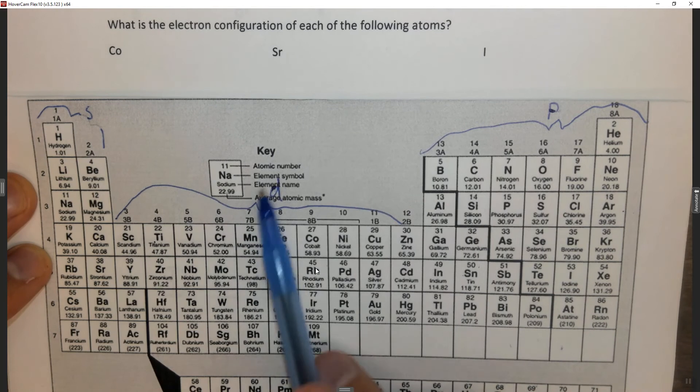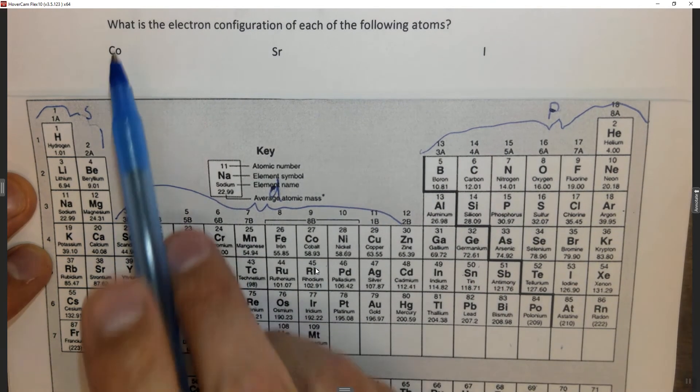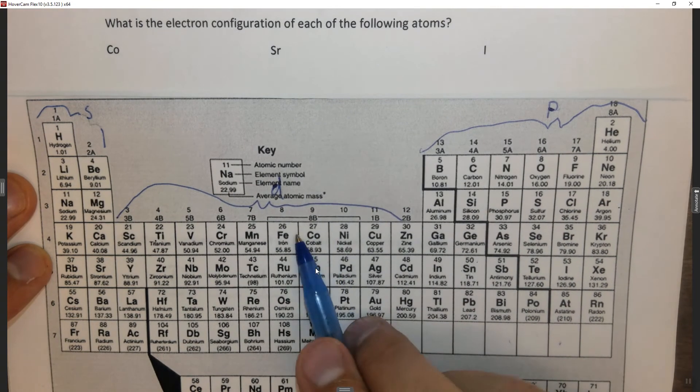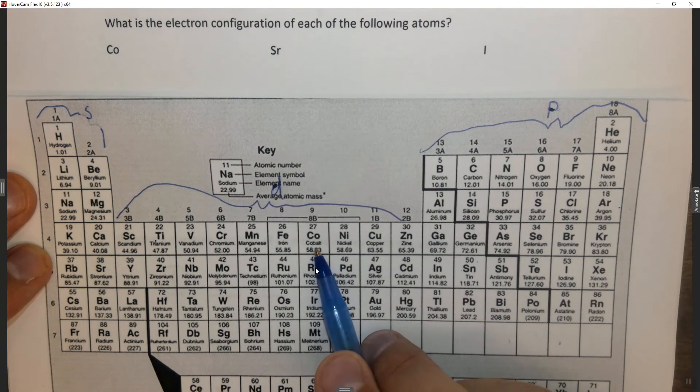So again this is the s block, this is the d block, and this is the p block. And what we're asked for is cobalt. So the first thing we obviously have to do is find cobalt on the periodic table, and cobalt is right here.